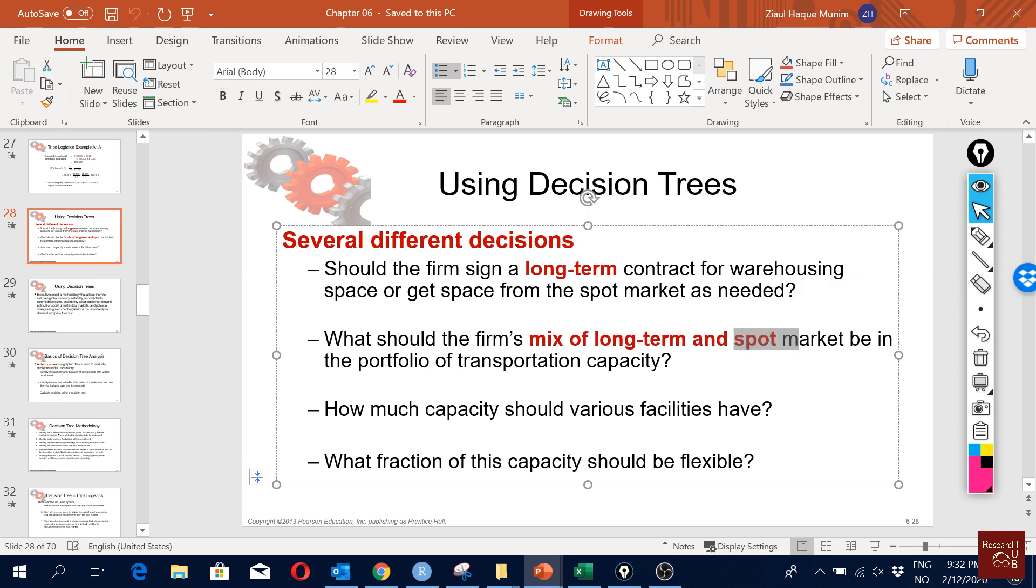There could be other different types of uncertainties with demand increase or price increase or decrease. We assume that demand will be the same for all three years, which is not likely the case. Demand can go up or down, price can go up or down.